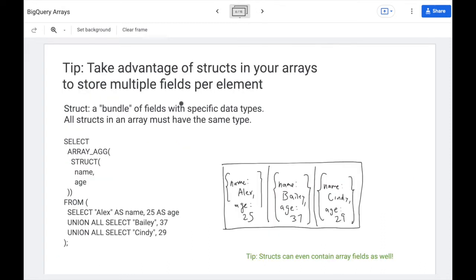So there's a lot you can do with array ag. One additional thing you can take advantage of is to define your elements as structs. So you're not limited to one value per element. If you use syntax like struct paren name and age, now you can store multiple values per element, which is really powerful. And in fact, you can even store arrays and structs. I'll have a future video where I go over how you work with structs in BigQuery.